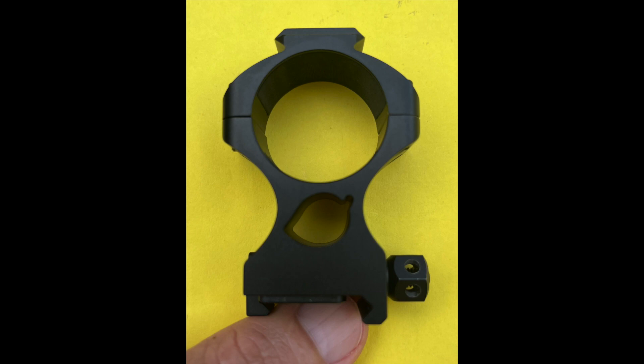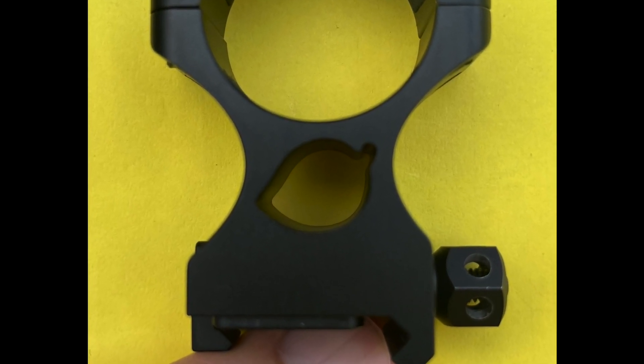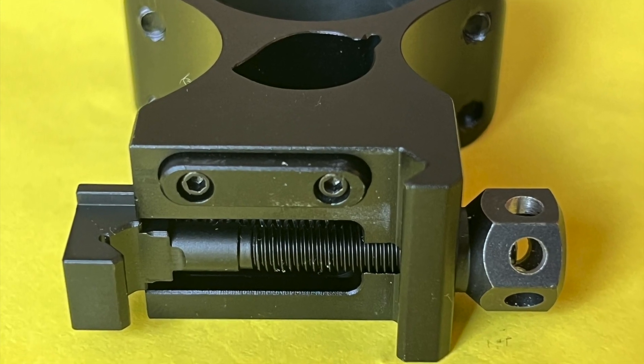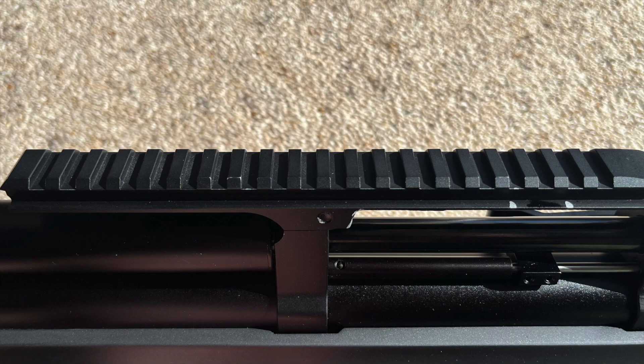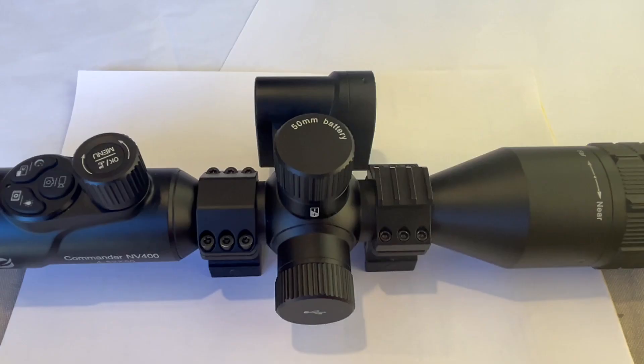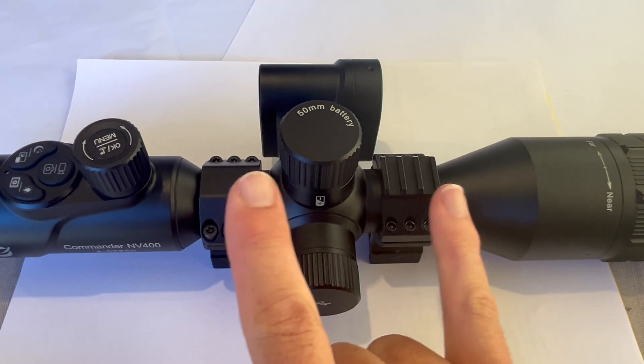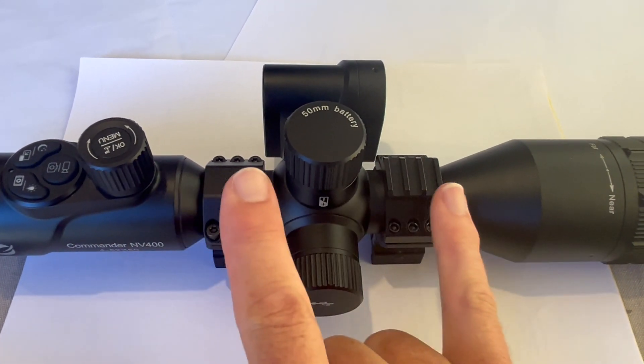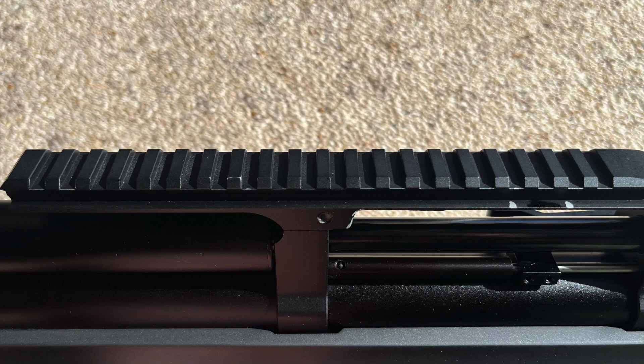The scope comes with a decent quality set of 30mm rings that are quick detachable for a picatinny rail. I thought the One Leaf logo on the rings was a nice touch. The mounting system is unconventional, but if you are mounting it onto a full length pic rail, then it works just fine. I think it's worth mentioning that there's not a lot of real estate on the tube. So moving the scope backwards and forwards in the rings to get your correct eye relief is not an option. But again, if you're mounting it onto a full length pic rail, that's not a problem.